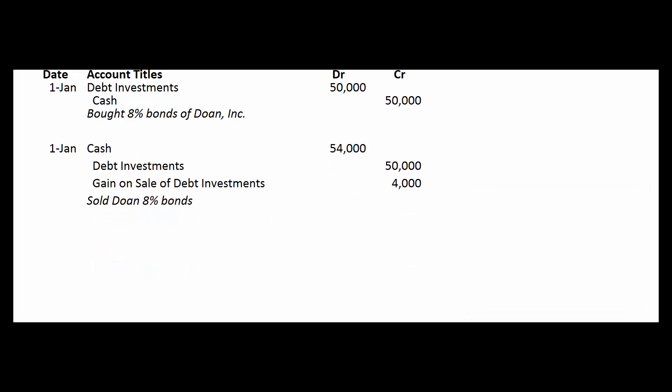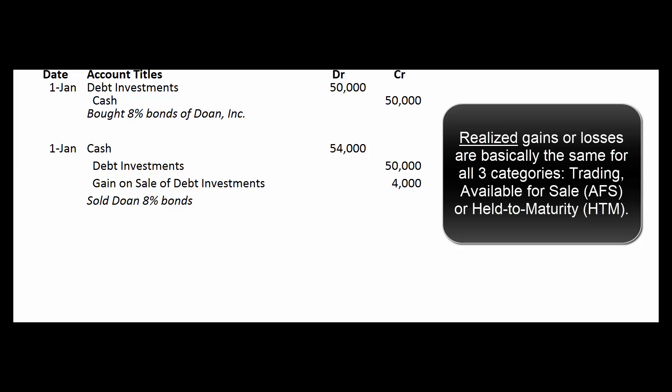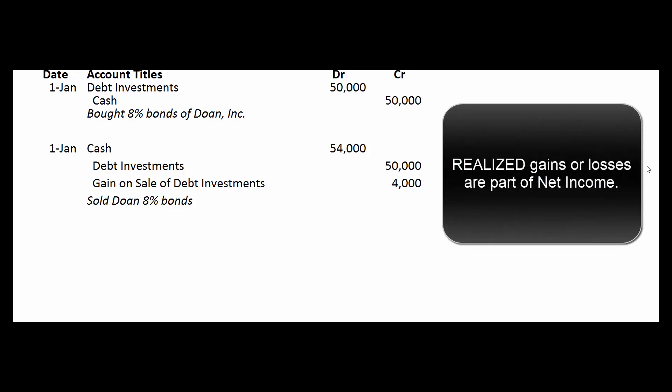Now let's pretend it's January 1st and the bonds go up in value — they were worth $50,000 before, now they're worth $54,000, and we sell them. We debit cash for $54,000, take the bonds off our books with a credit of $50,000 (they had a debit balance of $50,000), and the $4,000 difference is a realized gain — it goes to other revenue and gains on our income statement.